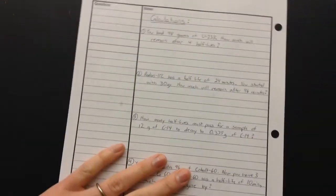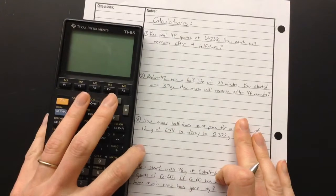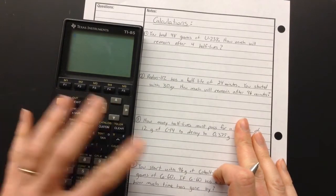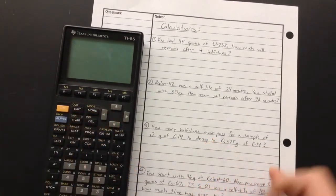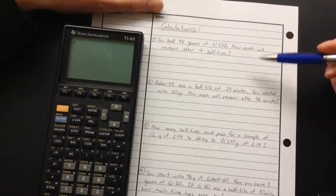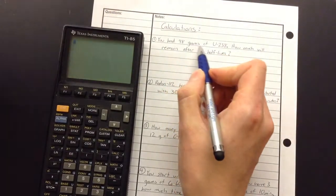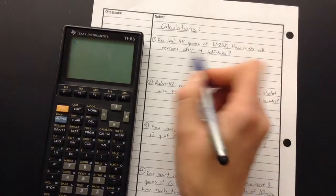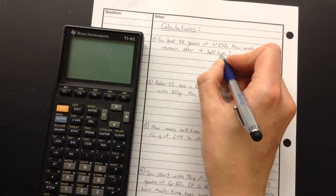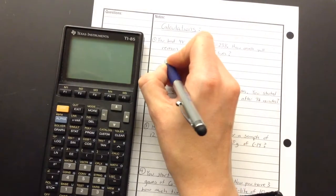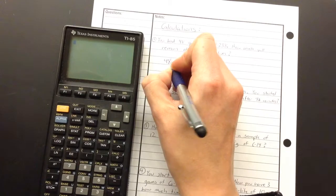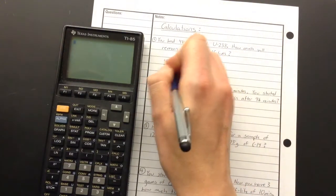So let's look at some calculations that you might have to do. In order to do this, you're definitely going to want a calculator. Here's my good, trusty, ancient calculator that works pretty well. So we're going to start, these are going to get progressively harder here. So let's say you had 48 grams of uranium-238. How much will remain after four half-lives? So what that means we're going to be doing is we're going to have our 48 grams, and after one half-life, we're going to divide that by 2.